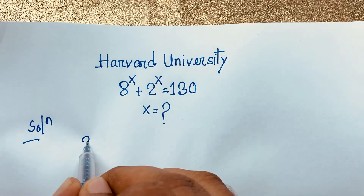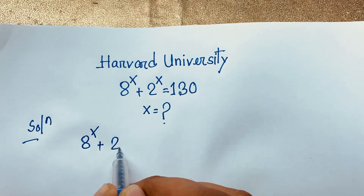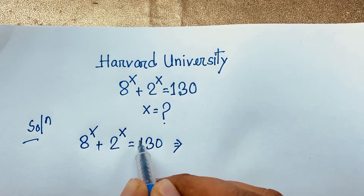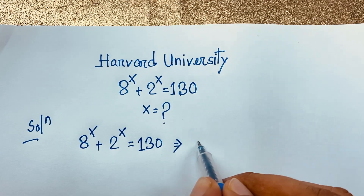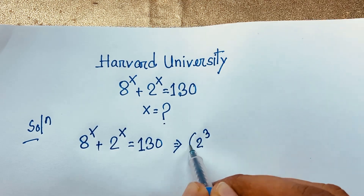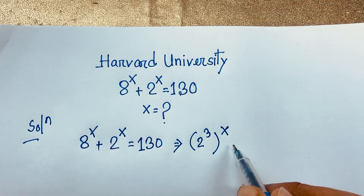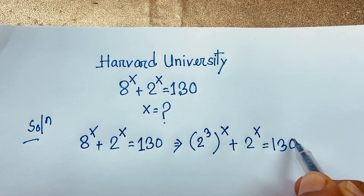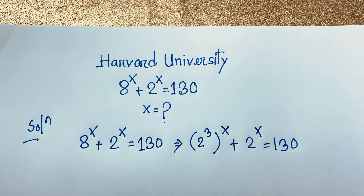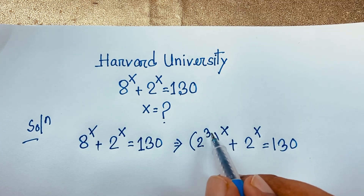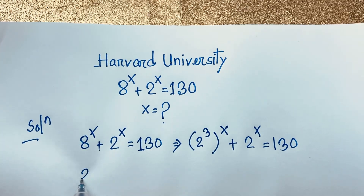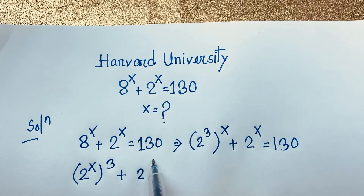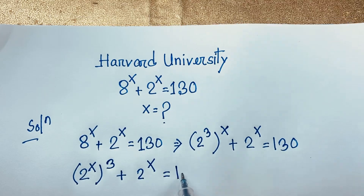Our question is: 8 to the power x plus 2 to the power x is equal to 130. Now, we know that 8 equals 2 to the power 3, so we rewrite this as (2 to the power 3) to the power x plus 2 to the power x is equal to 130. Applying the exponential formula, this becomes 2 to the power 3x plus 2 to the power x is equal to 130.